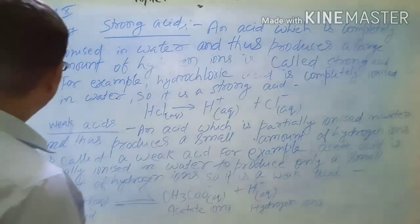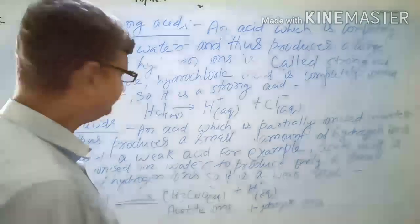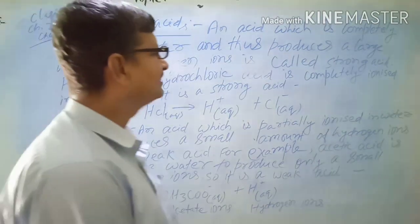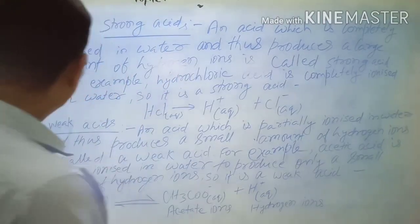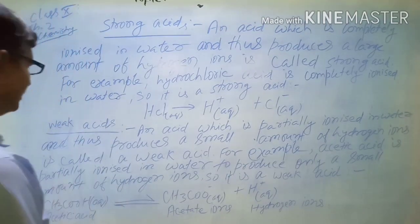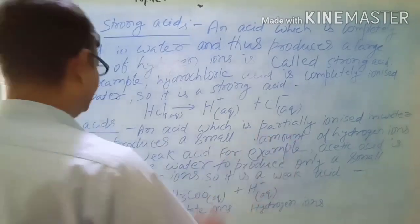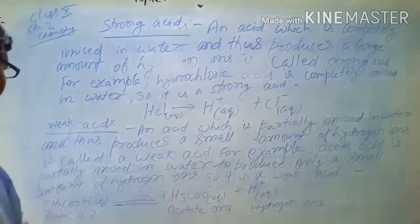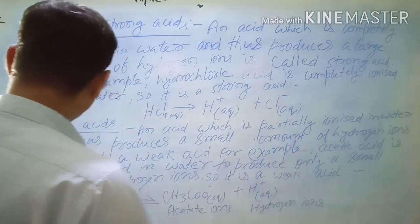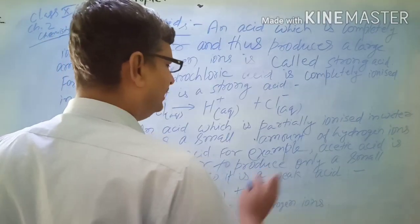Now I shall discuss about weak acid. An acid which is partially ionized in water and thus produces a small amount of hydrogen ion is called a weak acid. For example, acetic acid is partially ionized in water to produce only a small amount of hydrogen ion, so it is a weak acid.